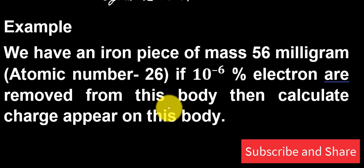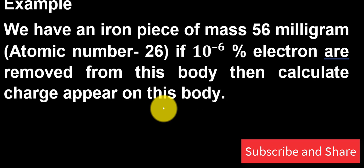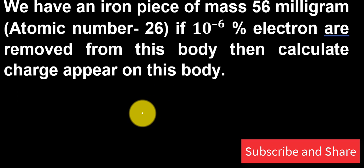I am giving you an example based on quantization of charge. We have an iron piece of mass 56 milligram. Atomic number of iron piece is 26. If 10^-6 percent electrons are removed from this body, then calculate charge appears on this body. Pause the button of your video and try to solve this problem yourself.